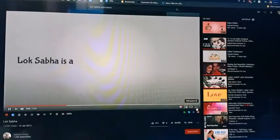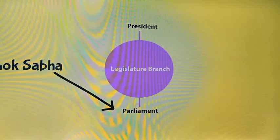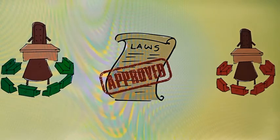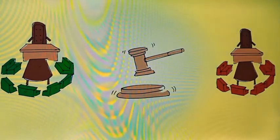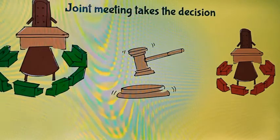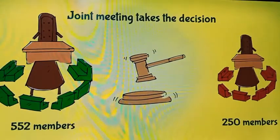The Lok Sabha is the powerful house of the parliament and a very important part of the legislative branch of the country, which contributes to making laws. Any ordinary law needs to be approved by both houses of parliament, and the final decision is taken in a joint meeting of both houses, where the decision of Lok Sabha is likely to win because of its larger number of members than the Rajya Sabha.